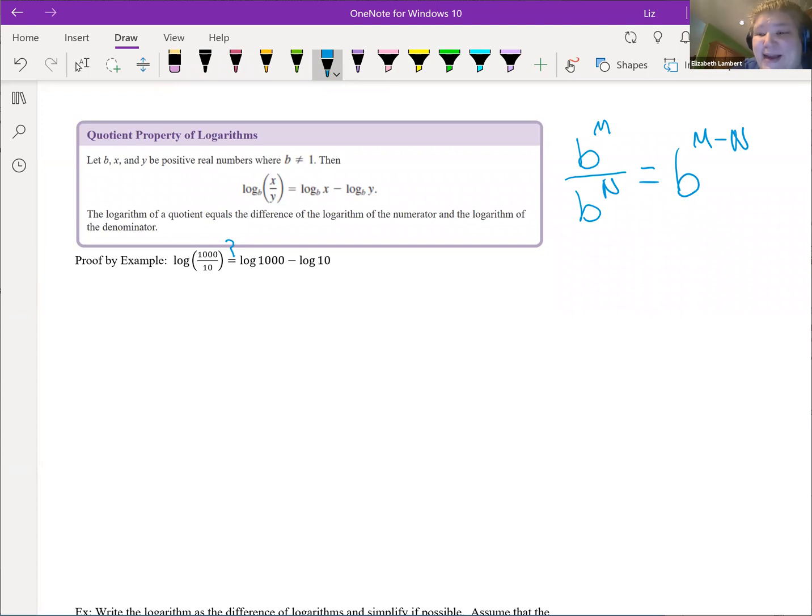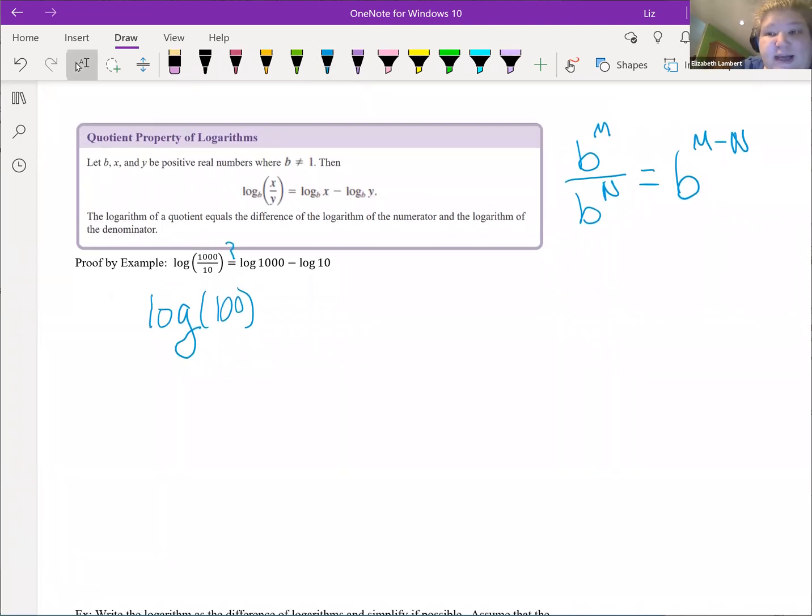Now the nice thing is you can actually crunch this on your calculator because I used regular log, but we can also figure it out. So the log of 1000 over 10 is really just log of 100. But we literally just talked about this in the last video. 100 is 10 squared, regular log is log base 10.